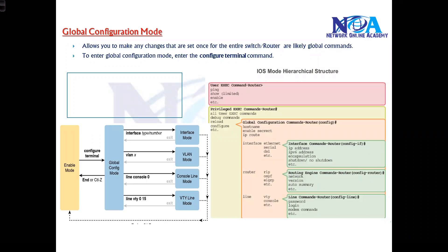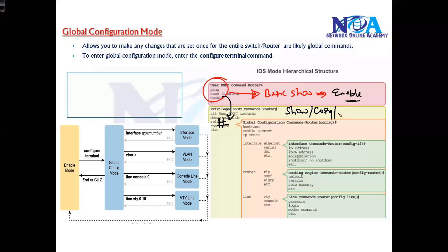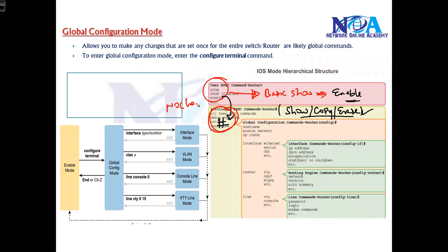The next thing we'll talk about is Global Configuration Mode. After user mode, where we can do basic show commands and basic verifications, we can go to privilege mode by typing the enable command. In privilege mode we can run all show commands, use copy and erase commands to save or erase configurations. However, we cannot make any changes in either of these two modes — like assigning an IP address, changing the hostname, or changing passwords. To make any changes, you have to go to the next mode called global configuration mode.